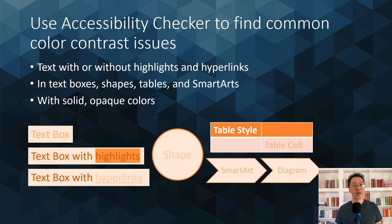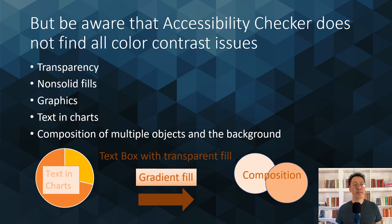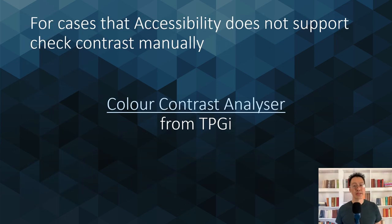Accessibility Checker can find common color contrast issues such as text with or without highlights, hyperlinks, in text boxes, shapes, tables, and SmartArts with solid and opaque fills. Use Accessibility Checker because it helps you find those issues automatically. However, it cannot find all color contrast issues — it misses issues involving transparency, non-solid fills like gradients, graphics, text in charts, or compositions of multiple objects in the background. If something looks like it might have too low contrast, check it manually using Color Contrast Analyzer.